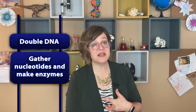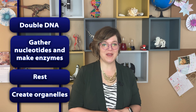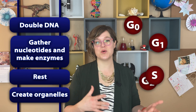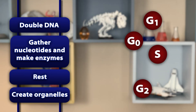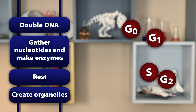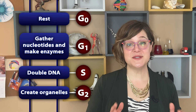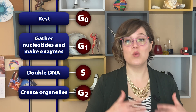Let's do a quick check-in. If we think about what the cell needs to do to divide, we can come up with the following items: double DNA, gather nucleotides and make enzymes, rest, and create more organelles. Pause the video for a minute and think about which phase each of these corresponds to. Press play when you think you're ready.